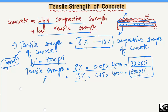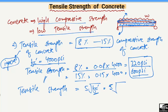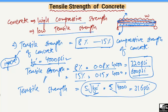There is also a formula to determine the tensile strength of concrete: tensile strength equals 5 times the square root of f'c, where f'c is the compressive strength of the concrete. If f'c is 4000 psi, putting this value in gives approximately 316 psi. This is a rough formula to determine the tensile strength of concrete if you know the compressive strength.